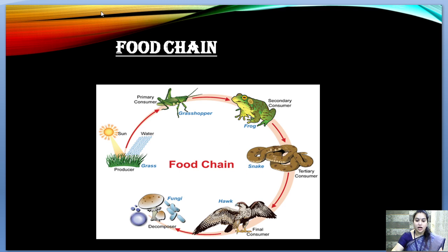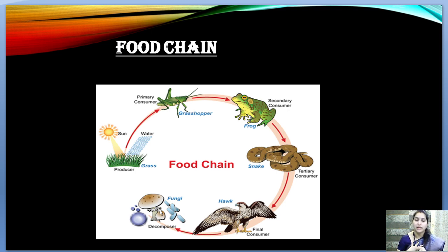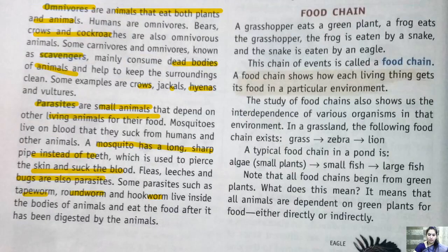Now the last topic of this chapter: the food chain. The maintenance of population of each species is very important. There is a process of eating and being eaten — plants are eaten by grasshoppers, grasshoppers are eaten by frogs, frogs are eaten by snakes, snakes are eaten by hawks, and when hawks die, they are eaten by decomposers like bacteria and fungi. This process continues in the environment.